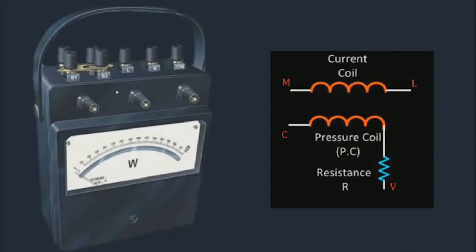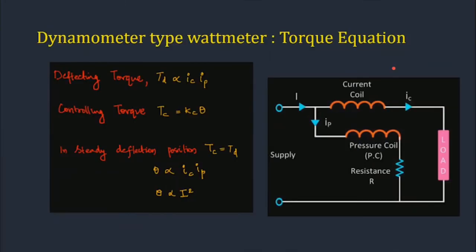In the dynamometer type wattmeter, terminals M and L are the terminals of the current coil, and C and V are the terminals of the pressure coil. For the torque equation, the deflecting torque TD is proportional to IC × IP, where IC is the current through the current coil and IP is the current through the pressure coil. The controlling torque TC equals KC × θ. At steady deflection, TC equals TD, meaning θ is proportional to I², giving a non-linear scale.